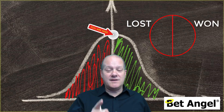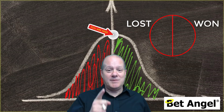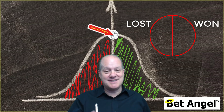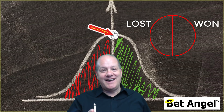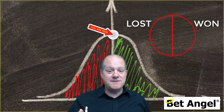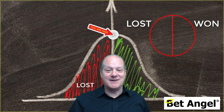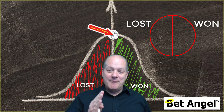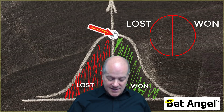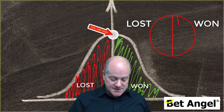Don't ever let anybody tell you there's no profit in the market, because there is absolutely tons. For every person that loses, there has to be a winner. And it's 50-50. The market is split down the middle, as you see on a bell curve effectively. On one side you have losses, and on the other side you're going to have lots of gains.